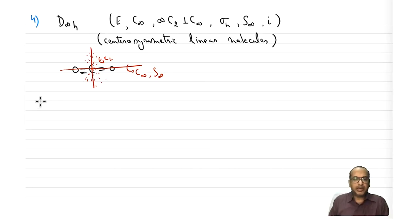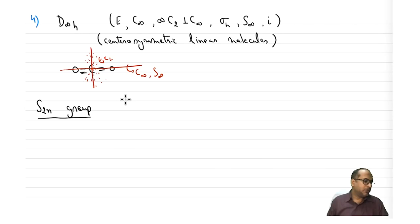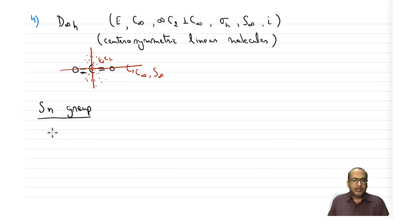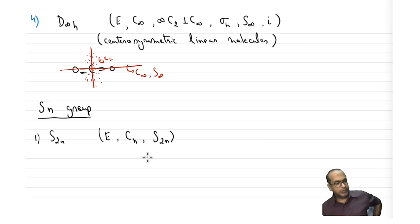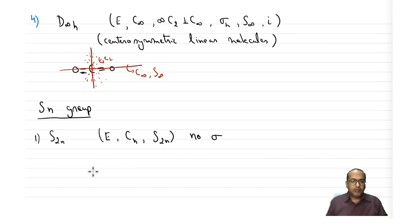That finishes dihedral point groups. The next category is the Sn point group — examples are difficult to find. Within Sn, for the S2n case, this will have E, Cn, and S2n symmetry elements with no other elements present — no σ planes.